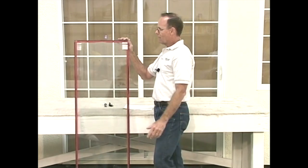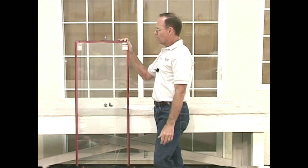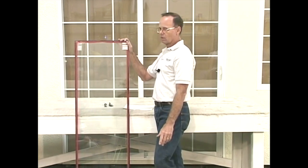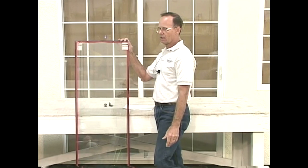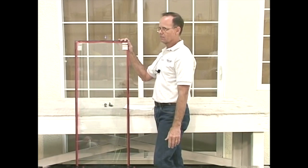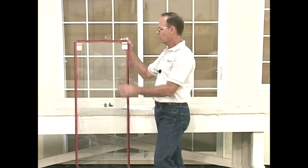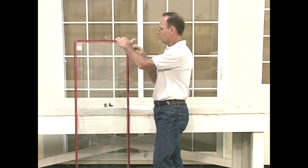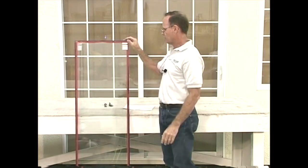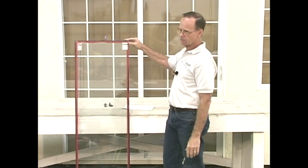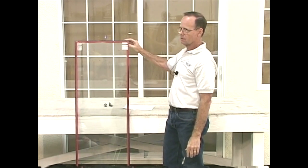Without a low E meter, you can tell where the coating is by the climate. When I get calls on scratch glass, I ask where they're located and whether it's a hot or cold area. If it's a cold area, I know the low E coating is on surface three.